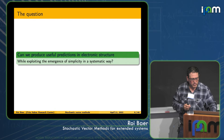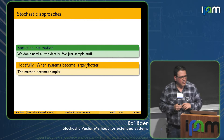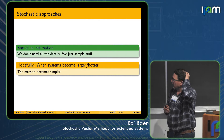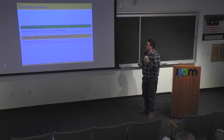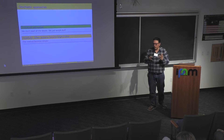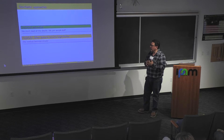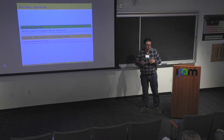The answer is yes. The idea is to use a statistical approach where we don't compute all the orbitals but just sample them. This is the main idea. Then we can do calculations for ground state, excited state, or thermal states — which usually require dealing with a huge number of orbitals — much more easily.